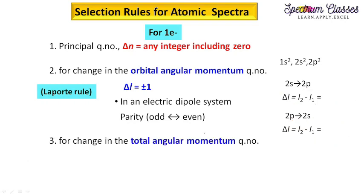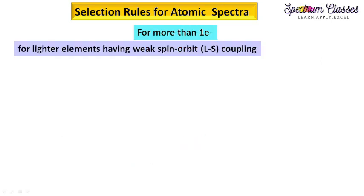The next important selection rule for atomic spectra concerns the total angular momentum quantum number, represented by delta J. The change in delta J must be equal to 0 or plus or minus 1. We will understand the condition for J equals 0 transitions later on. Now we are going to discuss the case for more than one electron systems.